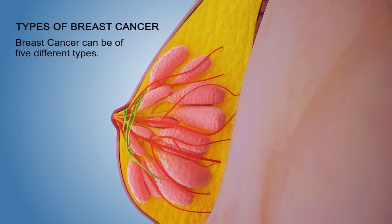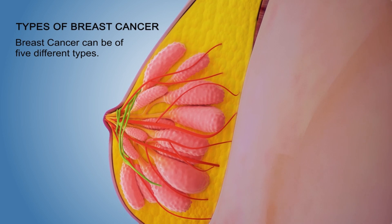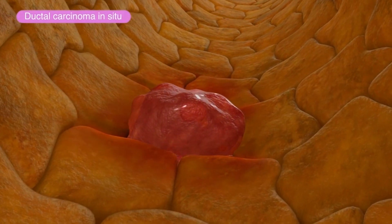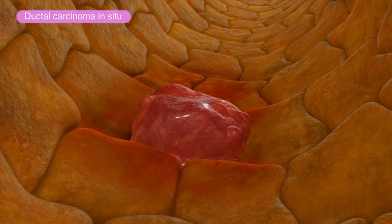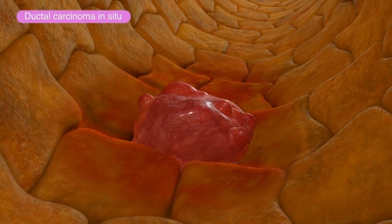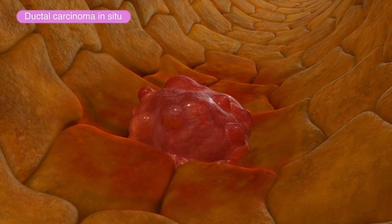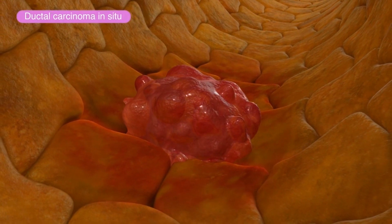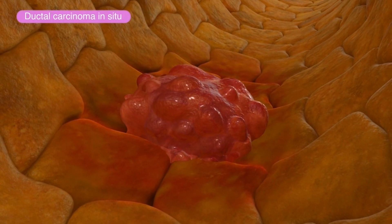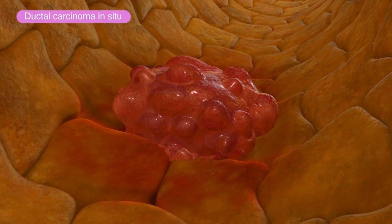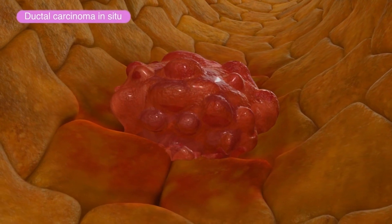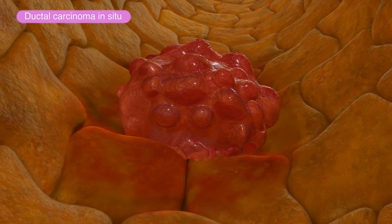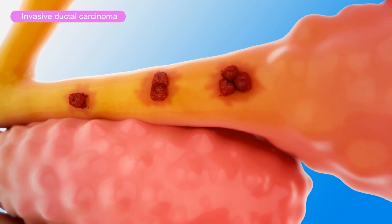Breast cancer can be of five different types. Ductal carcinoma in situ is a non-invasive breast cancer and is considered the earliest form of breast cancer. It grows slowly inside the milk duct walls, in the form of a cluster of cells, and does not move outside the duct.